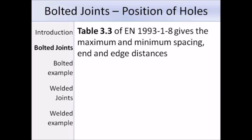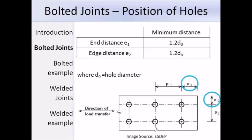Now I am going to talk about the positioning of fastener holes. For maximum and minimum spacing, end and edge distances, we need to refer to Table 3.3 of EN 1993 Part 1-8. In the diagram of a plate with bolt holes, four terms are defined: P1, P2, E1, and E2. E1 is the end distance measured from the centre of the bolt hole to the end of the plate in the direction of load transfer; the minimum distance is 1.2 D0, where D0 is the hole diameter. E2 is the edge distance measured perpendicular to the direction of load transfer; the minimum distance is also 1.2 D0.